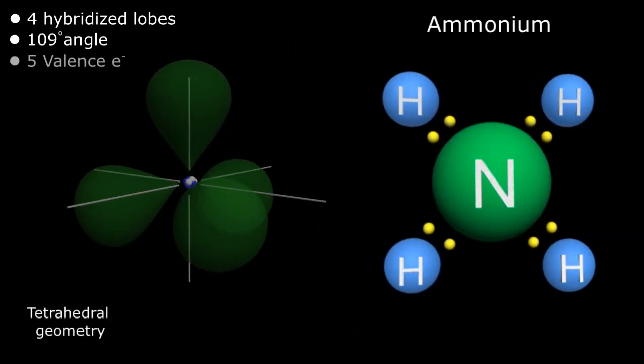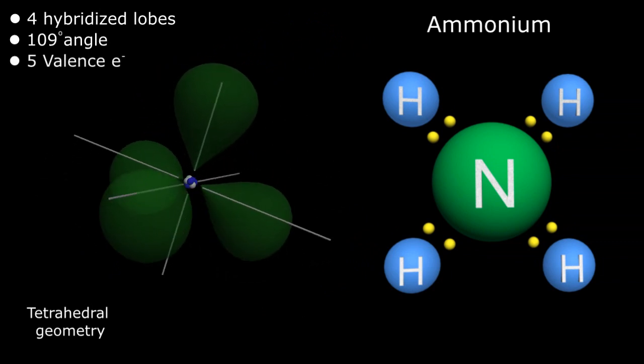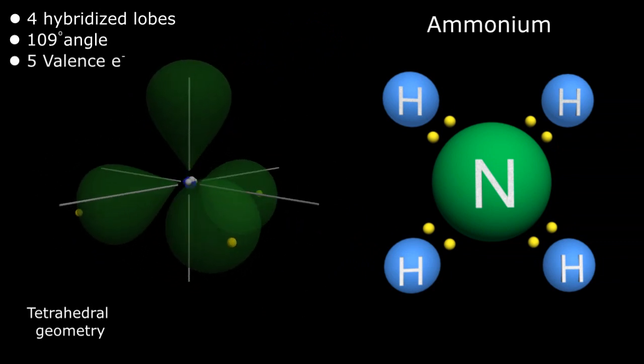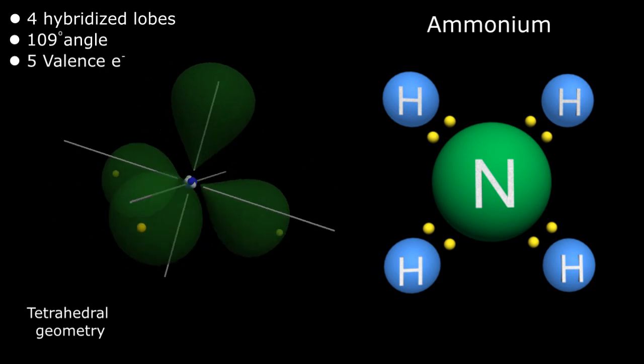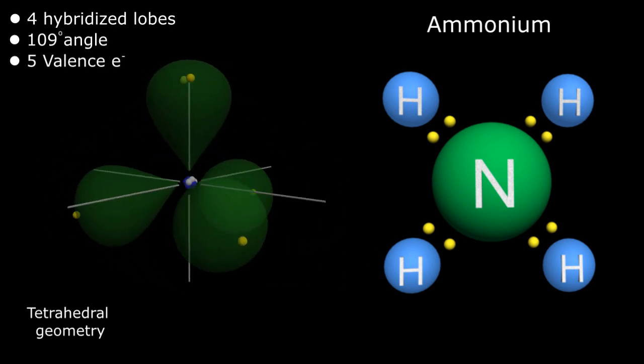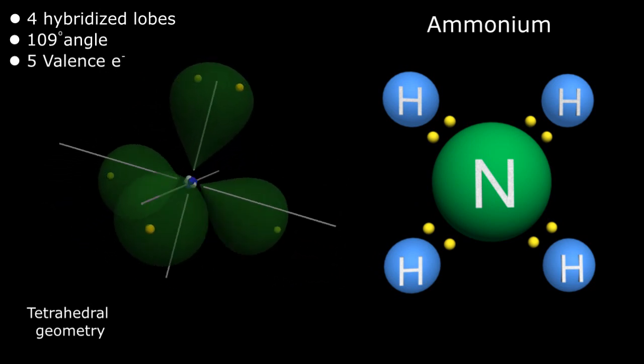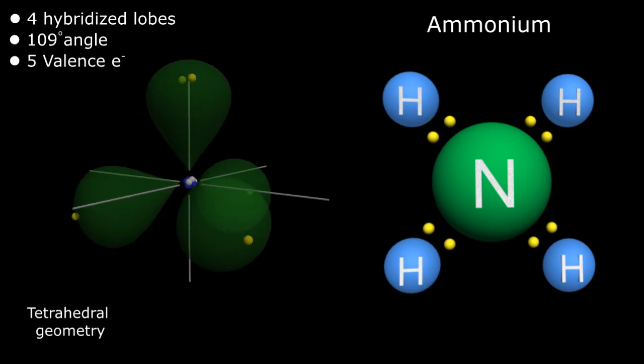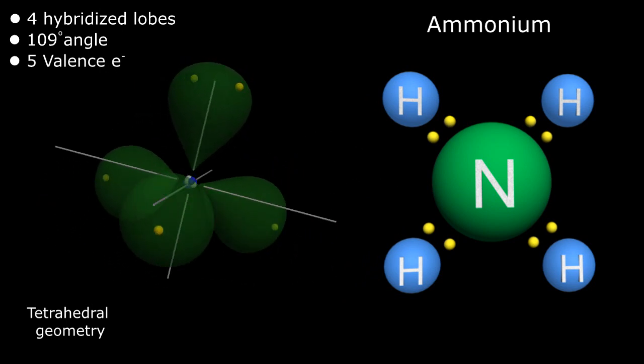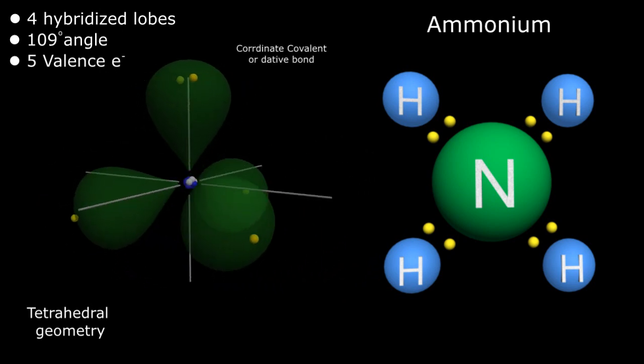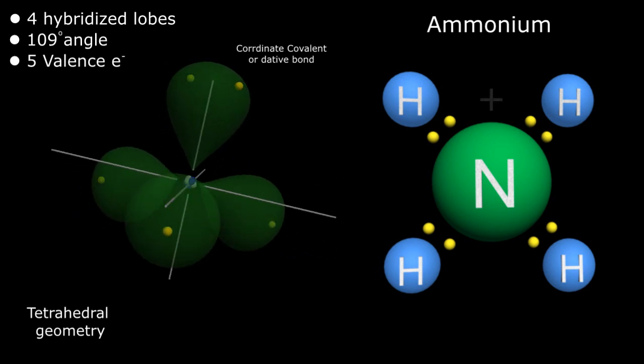Finally, remember we have five valence electrons, three of the lobes containing a single electron, which can participate in covalent bonding, with the fourth lobe containing two electrons that it is willing to share with an electrophilic cation, such as metals or hydrogen, via a dative or coordinate covalent bond, and thus giving the molecule its net positive charge.